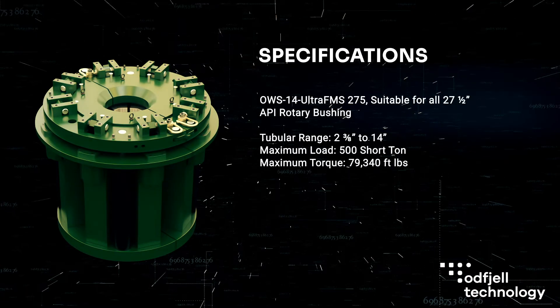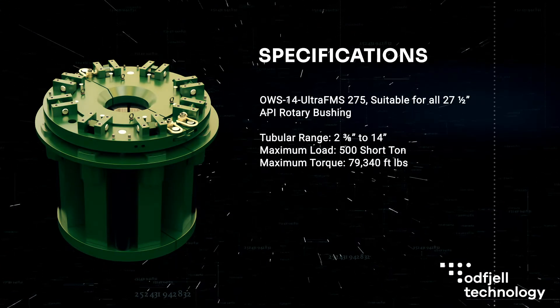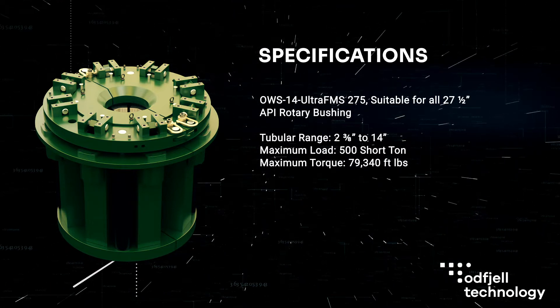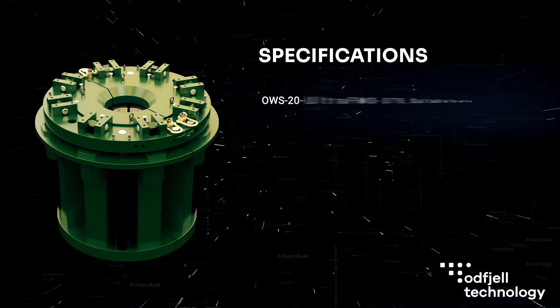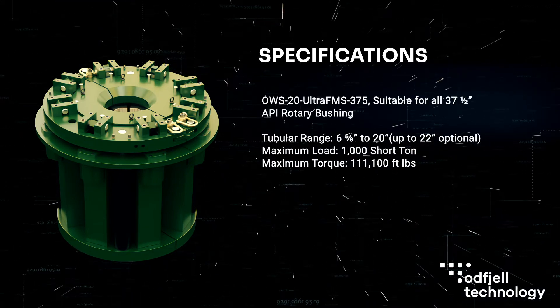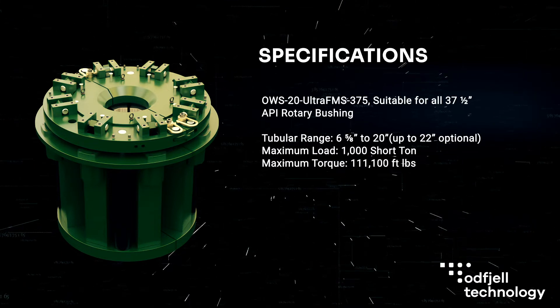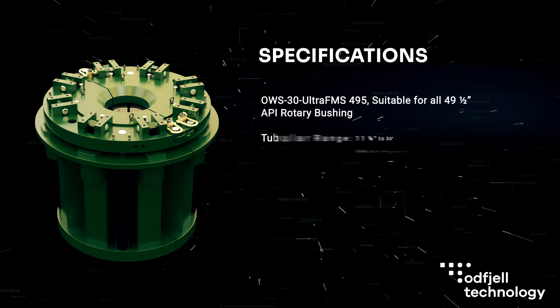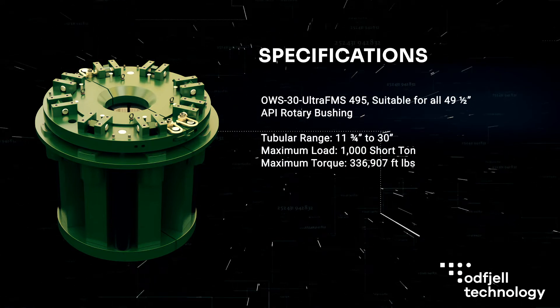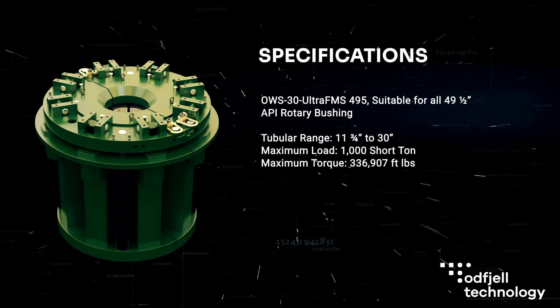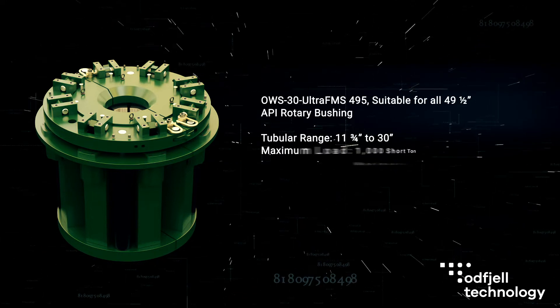Designed in accordance with API 7K and complete with CE marking, the UltraFMS is available in 27.5, 37.5, and 49.5-inch rotary sizes. Covering tubulars from 2⅜ up to 30 inches, the UltraFMS can safely handle string weights of up to 1,000 tons, with a safety factor of 2.25 times.